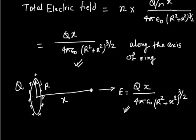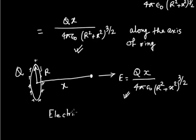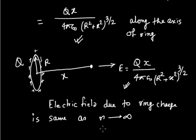Why are these two results the same? Because what we have done is taken n number of charges. If n goes to infinite, this becomes a continuous distribution. So you can calculate the electric field due to a continuous distribution by calculating the electric field due to a discrete distribution. Notice that n cancels even for a finite number of charges, giving the same answer as long as the total charge Q is the same.